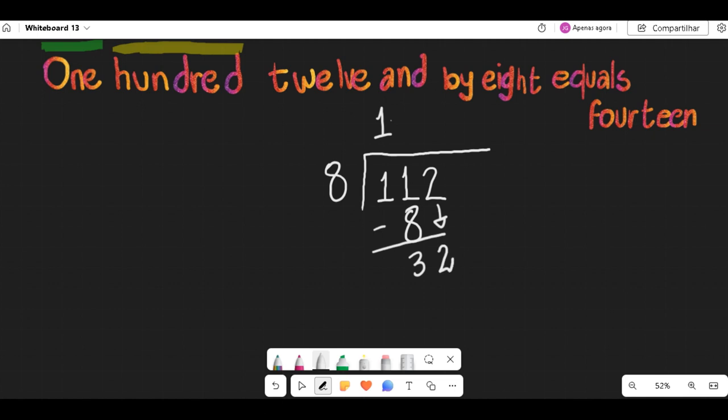Bring the next digit of 112 down, which is 2. Now we have 32. Divide 32 by 8. The number 8 fits exactly into 32, with no remainder. Therefore, the quotient for this step is 4.